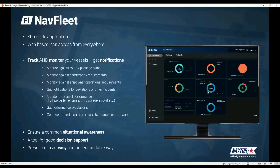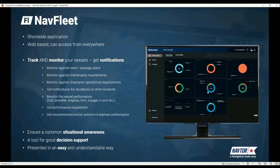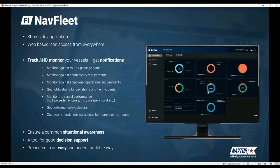NavFleet will give you the features of tracking and monitoring — you will be able to track and monitor your vessels and receive notifications if there are deviations. It will monitor against a route and passage plan, against charter party requirements, ship owner operational requirements such as weather limits or wave heights. You will have notifications if there are deviations to plans or other incidents. If you enter high-risk areas, you will also have notifications. After the acquisition of Tress, as Borger mentioned, we now also have the possibility to monitor vessel performance related to hull, propeller, and engines.